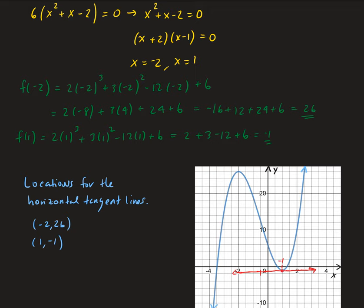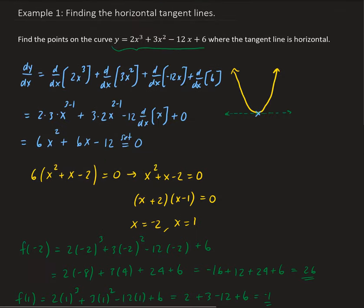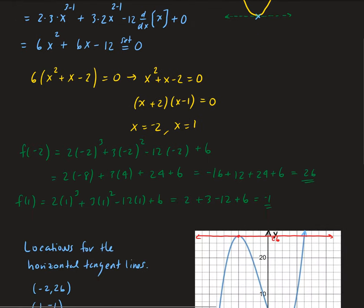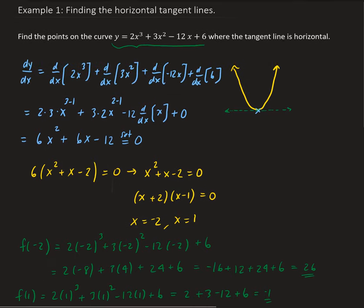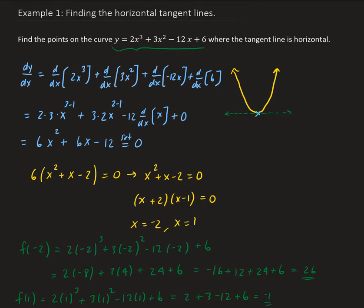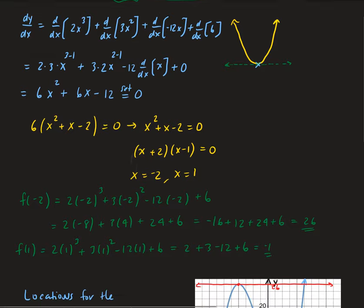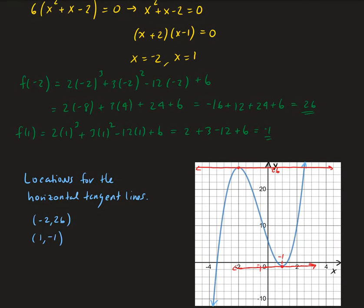So we have one horizontal tangent line going through the coordinate (1, −1), and the other one is at (−2, 26). Again, we located those by taking the derivative of the curve and setting it equal to 0 to obtain the x values, and then we simply plug those x values back into the function — because that's where the horizontal tangent line intersects the curve — to give us the full coordinates.